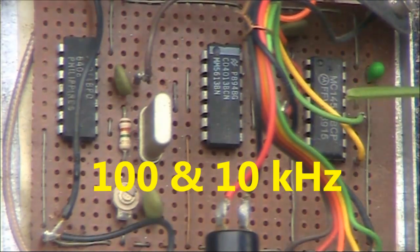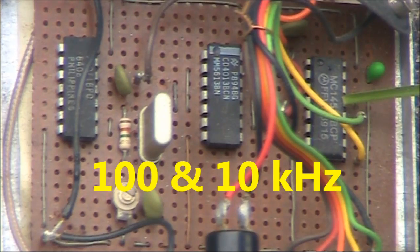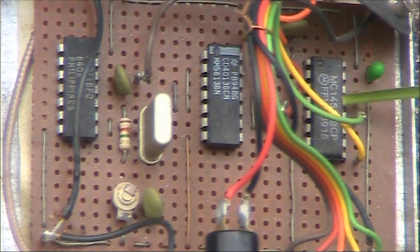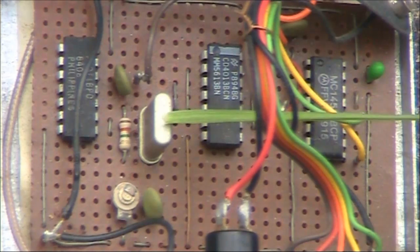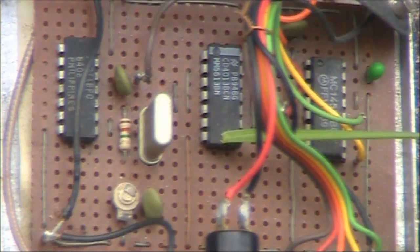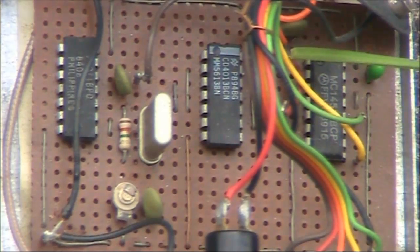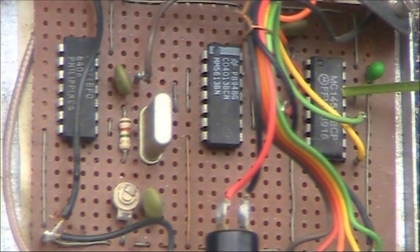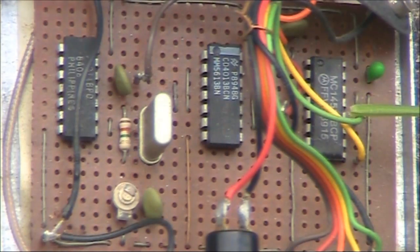Then following on from that is another IC, a 14518. That has two divide by tens. So the idea is that from 4 megahertz, you can divide by two to get 2 megahertz and also 1 megahertz. And the 1 megahertz output goes into the 14518 to get 100 kilohertz or 10 kilohertz, which is the lowest this calibrator goes down to.